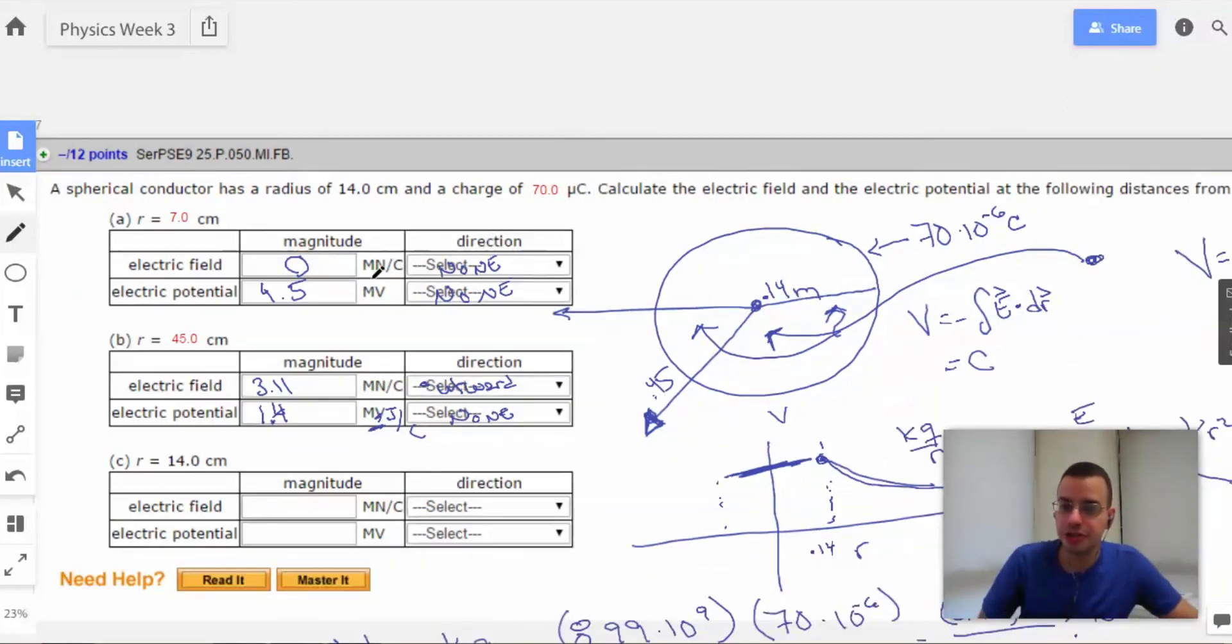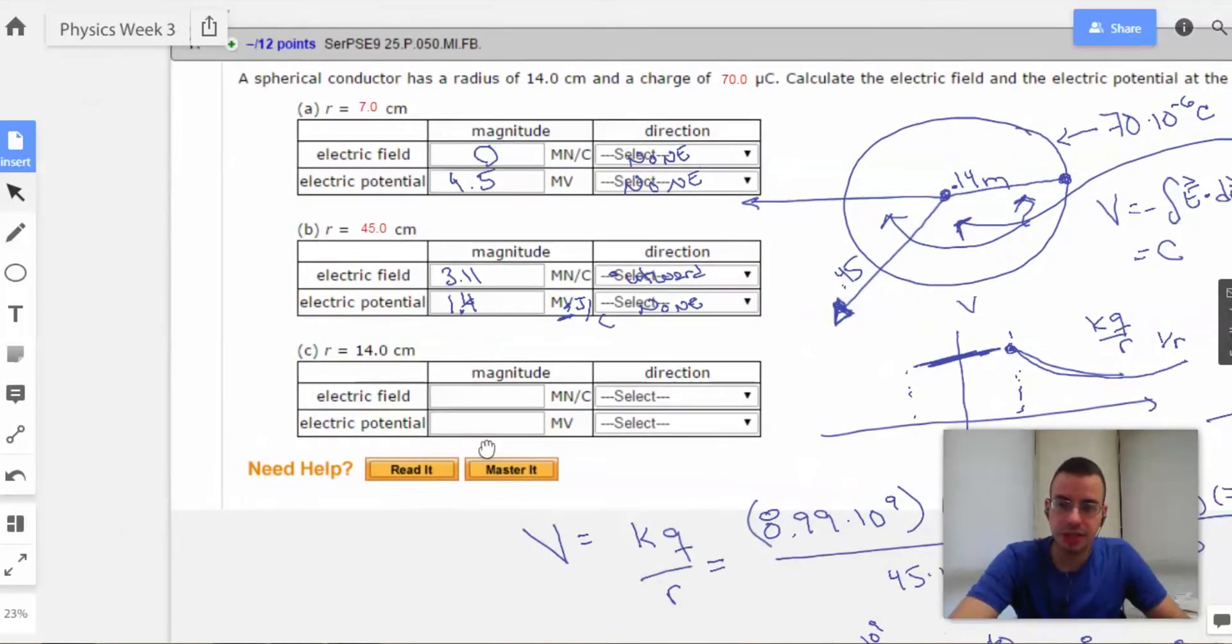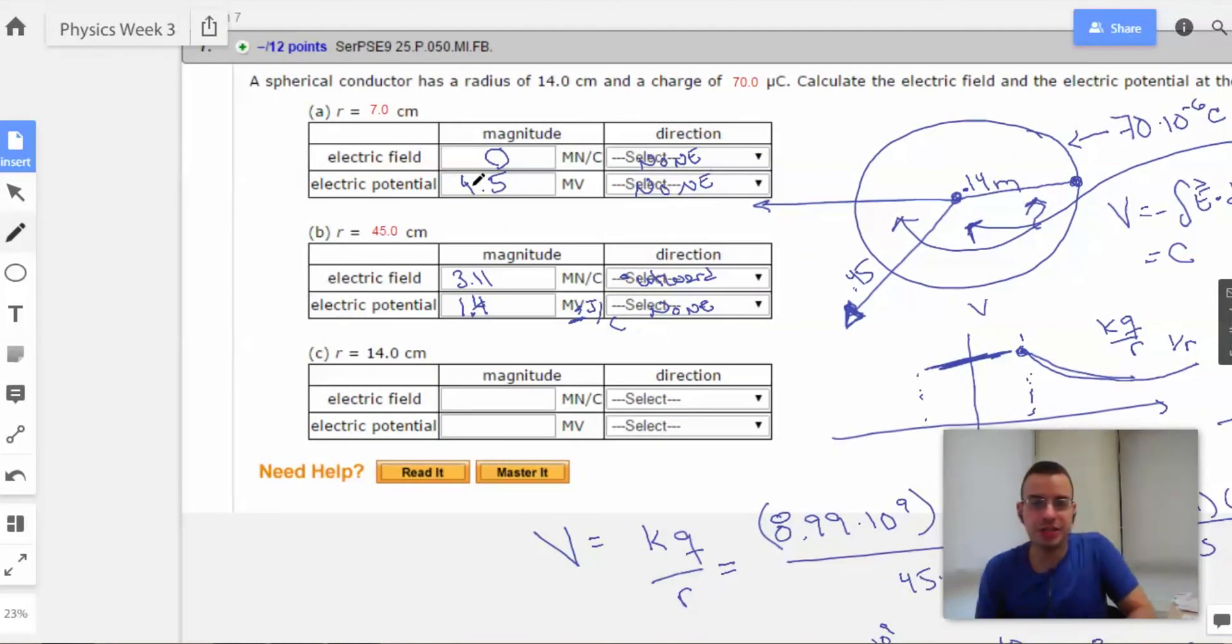Alright. So a spherical conductor. So the electric field at exactly 14. So the radius is 14. Then it wants to look at exactly 14. So for the electric potential, this is going to be easy.